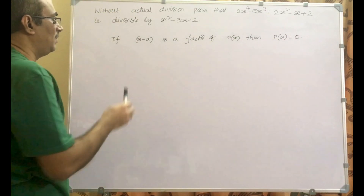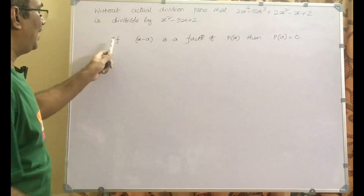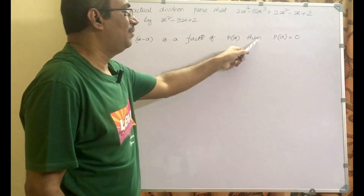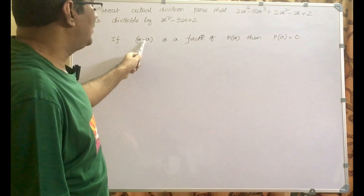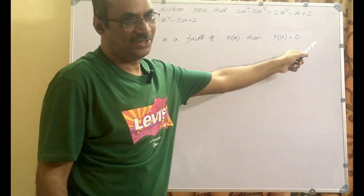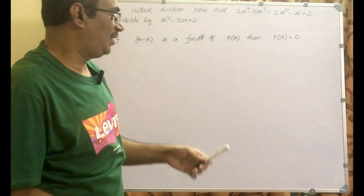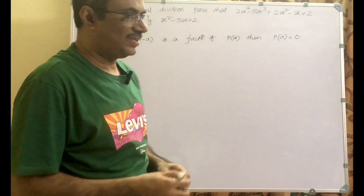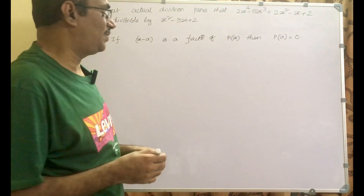To solve this problem, we will be using the factor theorem, which says that if x minus a is a factor of p of x, then p of a equals 0. If x minus a is a factor of a polynomial, then its remainder is 0. Whenever the remainder is 0, x minus a is a factor of p of x. We will capitalize on that factor theorem here to solve this problem.